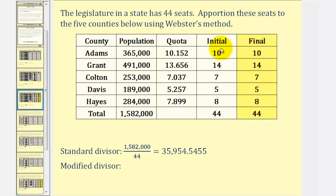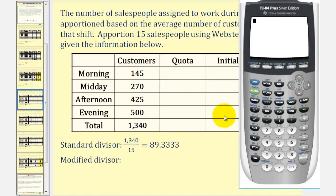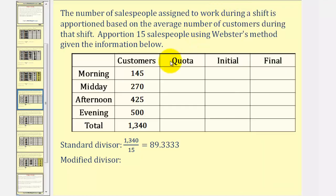Many times we don't find the final apportionment the first time, so let's take a look at a second example. The number of salespeople assigned to work during a shift is apportioned based upon the average number of customers during that shift. We want to apportion 15 salespeople using Webster's method given the information below. We have four shifts. The first step is to find the standard divisor by summing all of the customers over these shifts, which gives us 1,340. We divide this by the number of salespeople, which is 15, giving us a standard divisor of approximately 89.3333. Now we find each shift's quota by dividing the number of customers by the standard divisor. For the morning shift, we'd have 145 divided by 89.3333, giving us a quota of approximately 1.623. We would do the same for the remaining shifts.